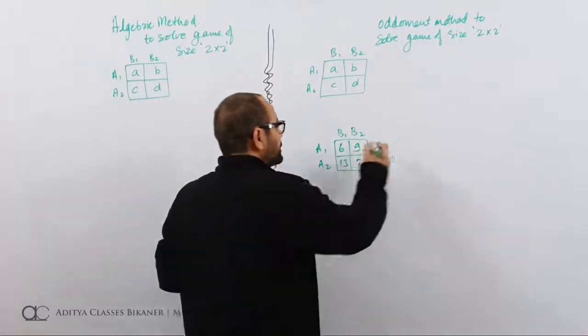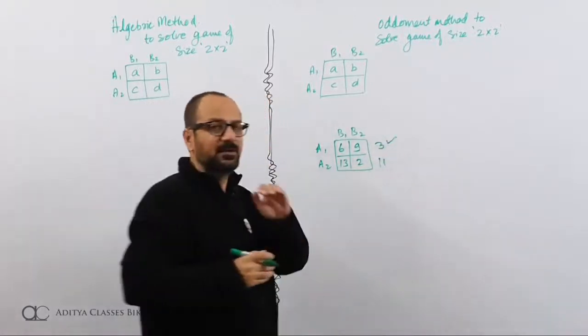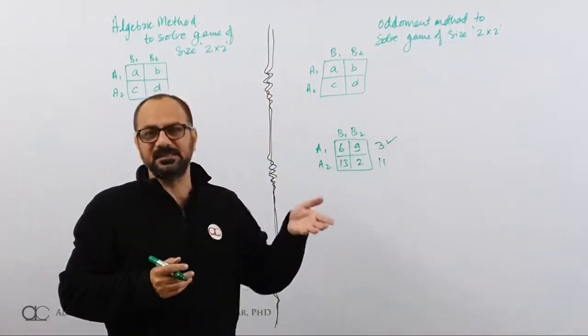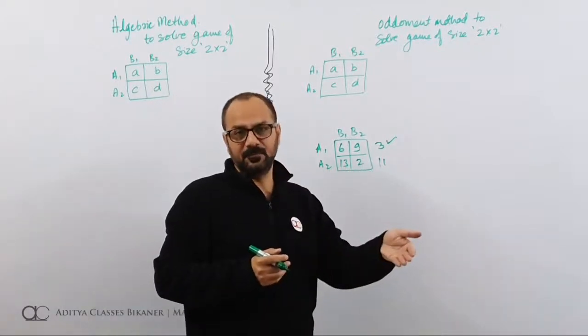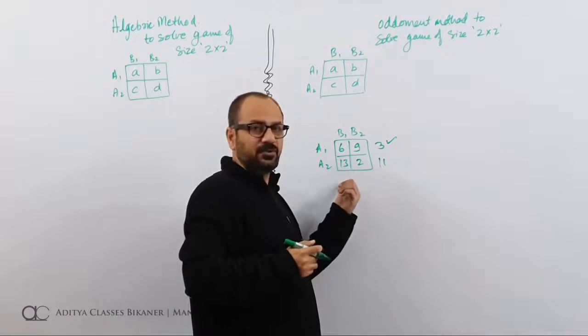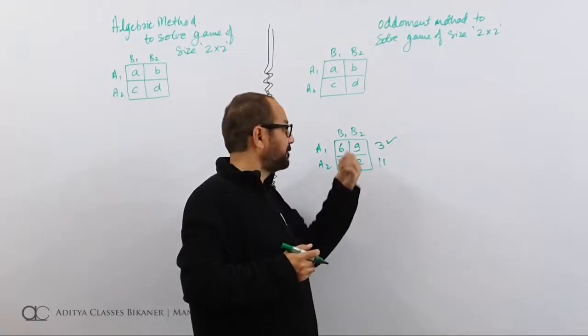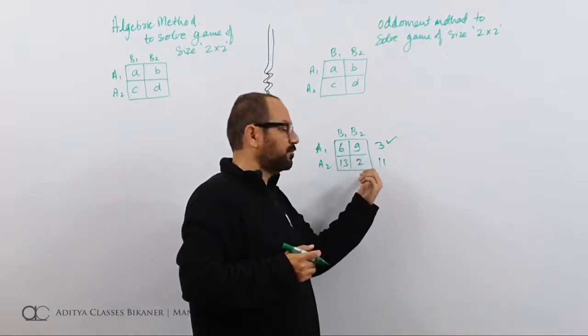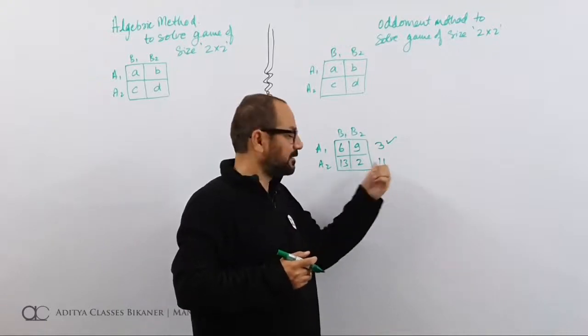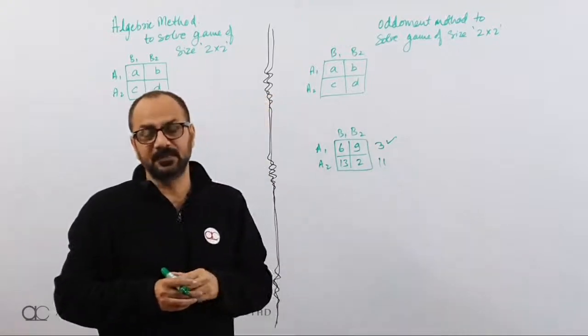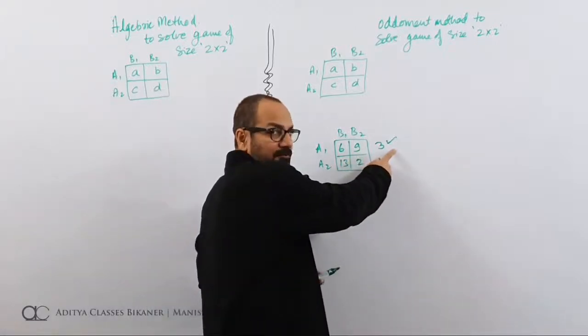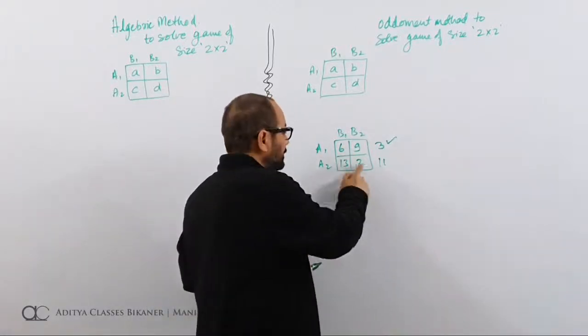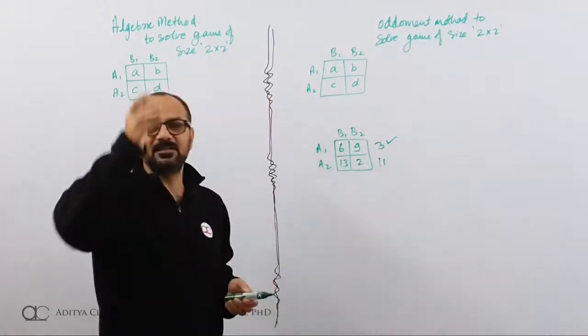Now, which strategy looks better? Obviously, this strategy looks better because I will be losing only 3 in worst case scenario. While here, I will be losing 11 in worst case scenario. It is good to win 13 but definitely B will make an effort to go to this cell, to go to B2. In that case, I will be suffering a loss of 11. This is what we mean when we take difference: 9 minus 6, that is, a loss of 3 is possible. 13 minus 2, that is, a loss of 11 is possible.